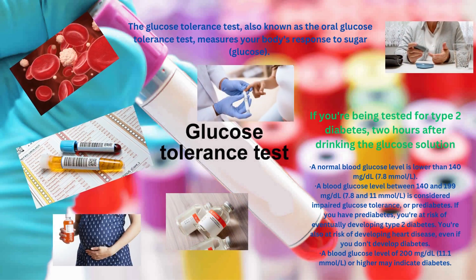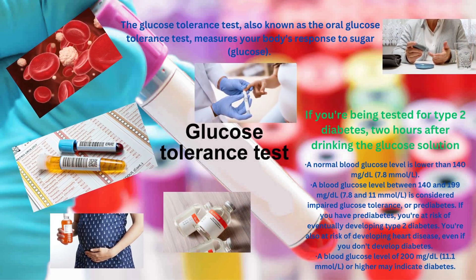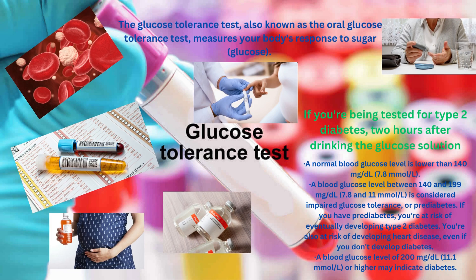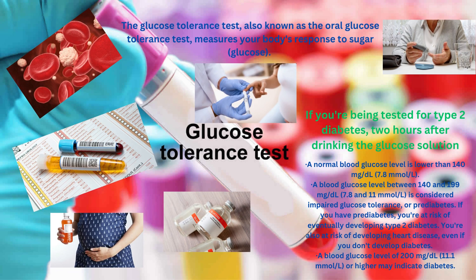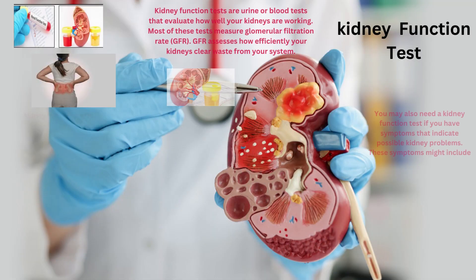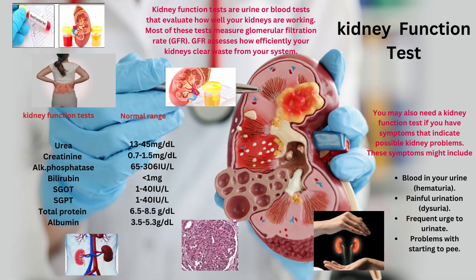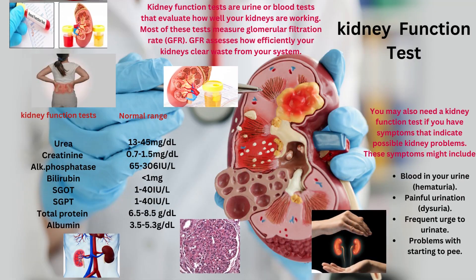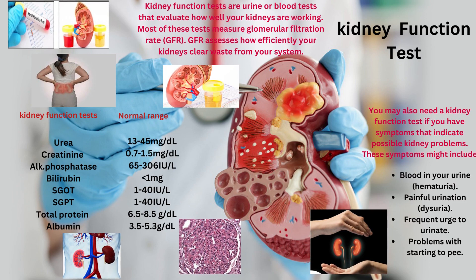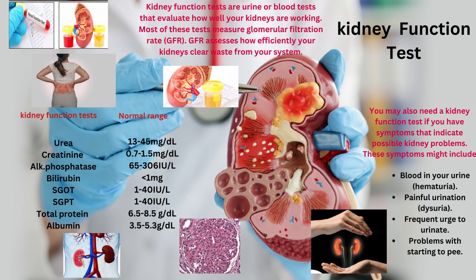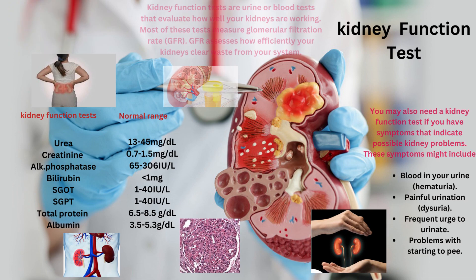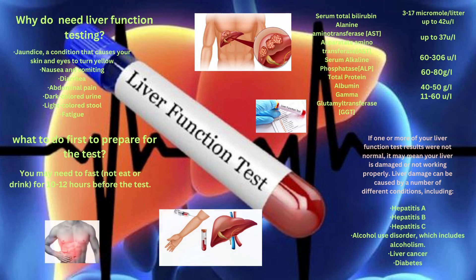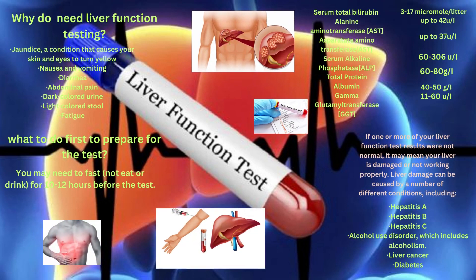Glucose Tolerance Test. The glucose tolerance test, also known as the oral glucose tolerance test, measures your body's response to sugar. Kidney Function Test. Kidney function tests are urine or blood tests that evaluate how well your kidneys are working. Most of these tests measure the glomerular filtration rate.